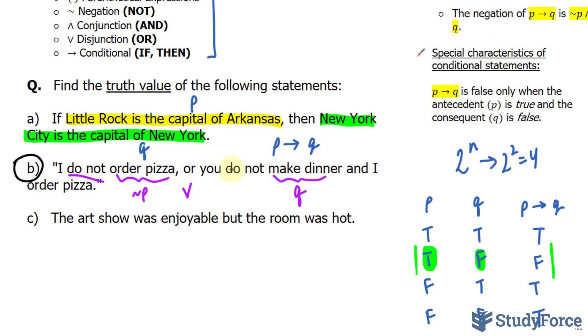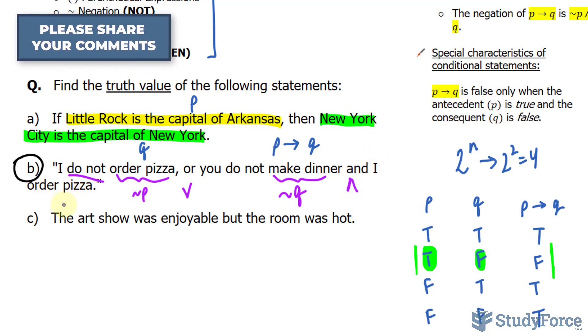We'll call that Q and it's also negated - do not. And as a conjunction, you represent it by this symbol. I order pizza. So once again, we're using the letter P here and it's not negated, so no need for the tilde.